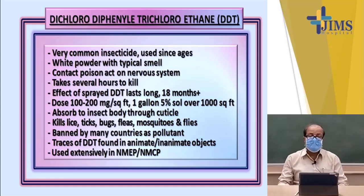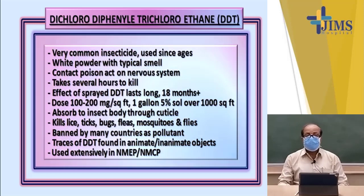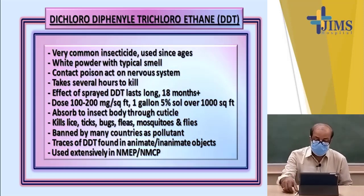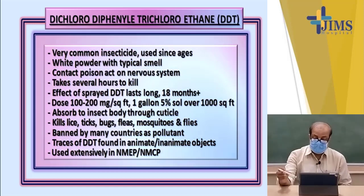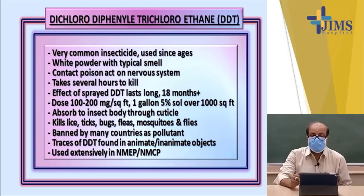In India, DDT was used extensively in the national malaria control and eradication program. However, at present it has been replaced by malathion because of its residual action as well as its biological contaminant properties.